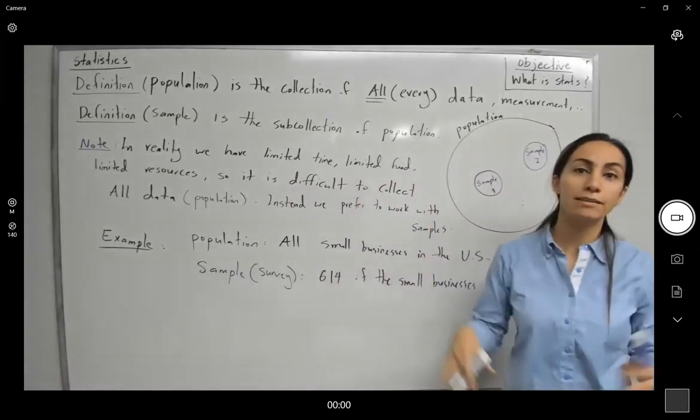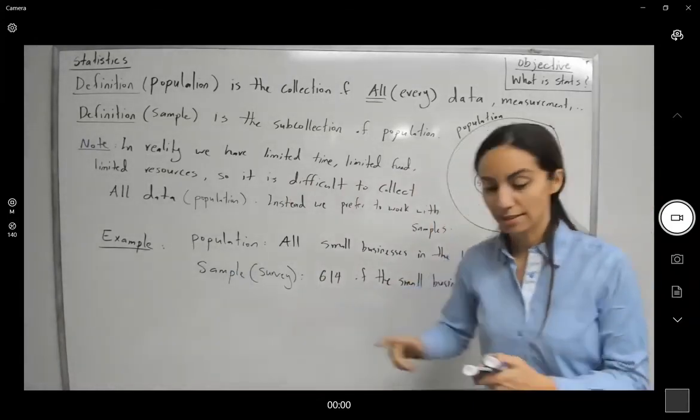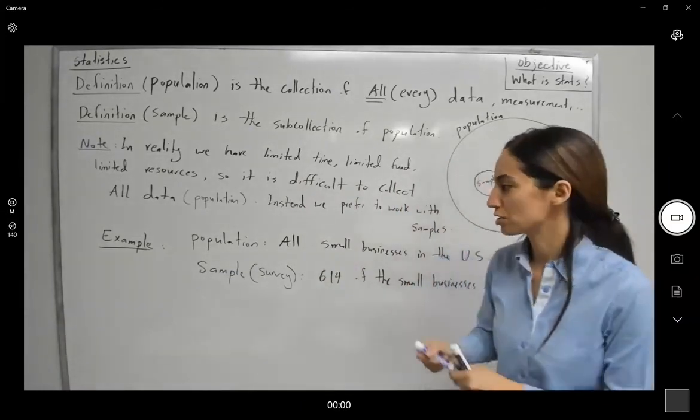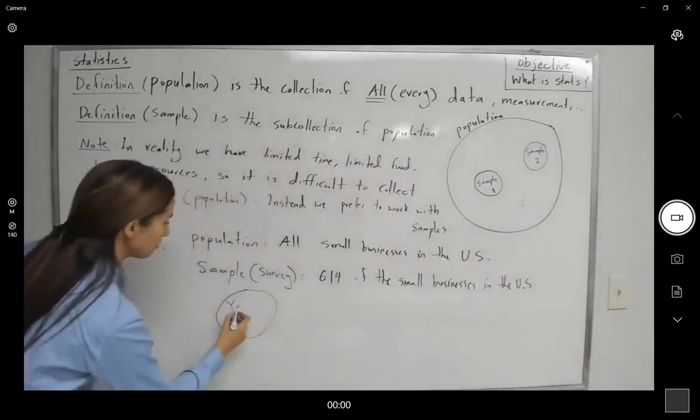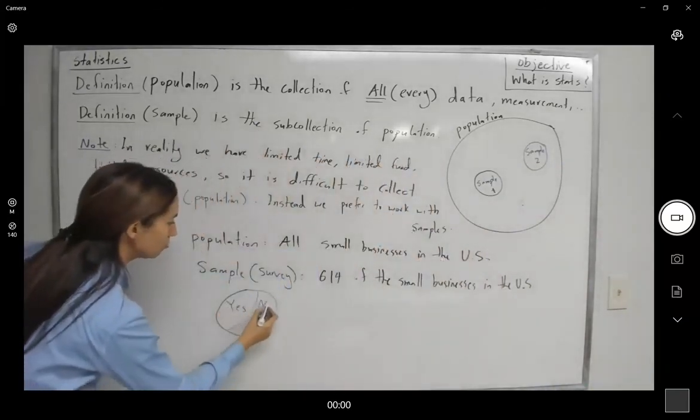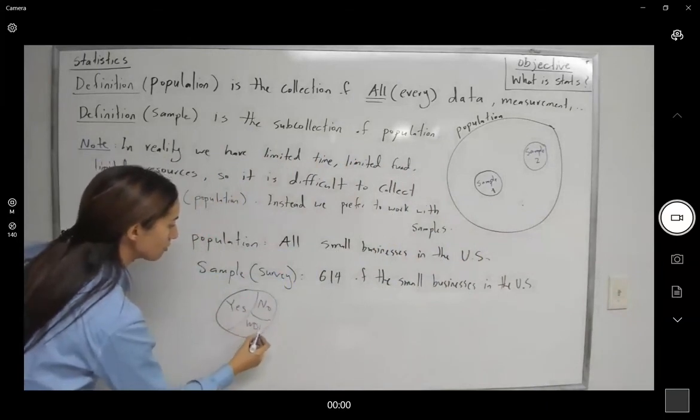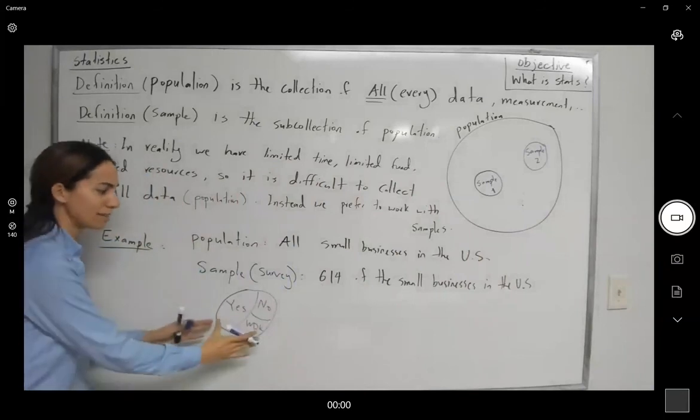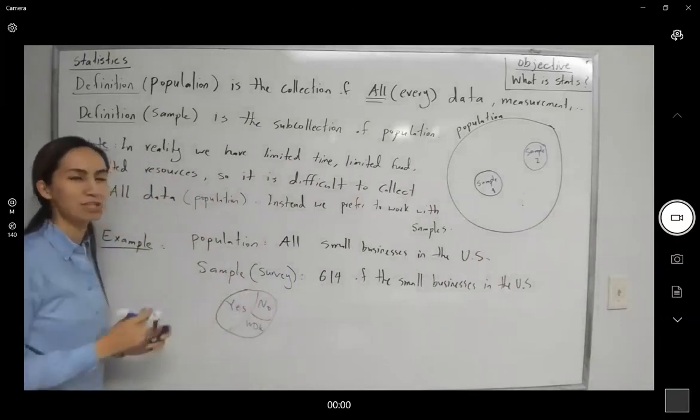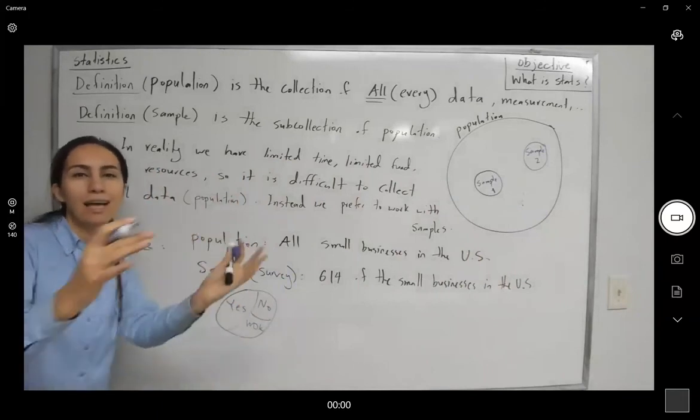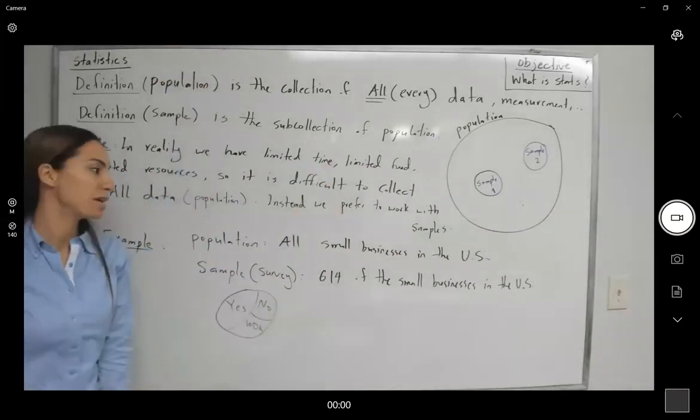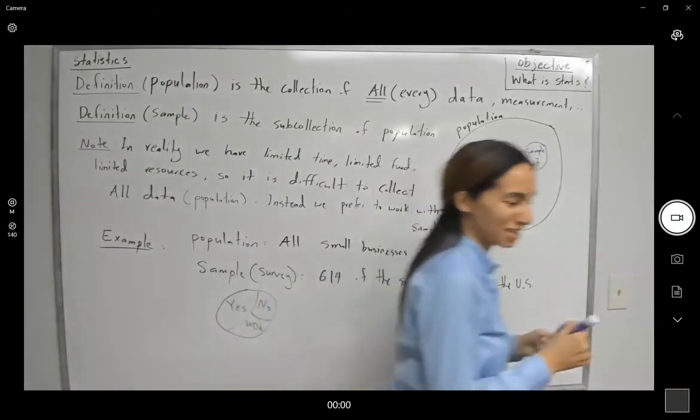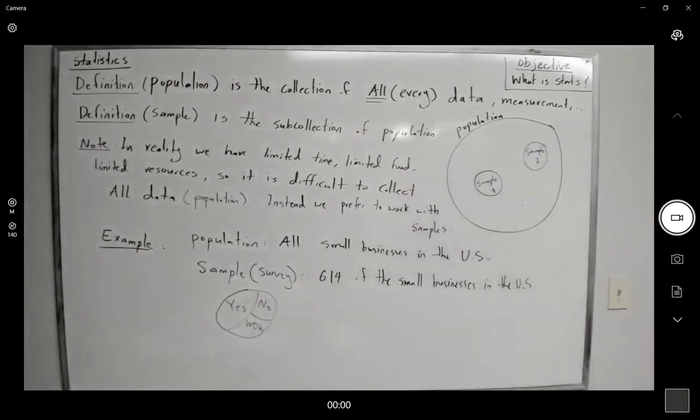So you might say, hey, what about that 258 that said yes? Well, in that survey, of course, you get some answers. So in this sample that you have, some said yes, some said no, some said we don't know. That is the partition of your sample. But what is your sample is that small portion that is taken from the population, which is all businesses, small business owners in the United States.